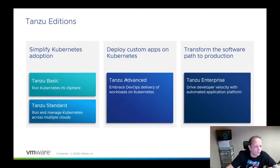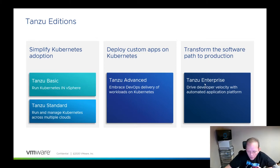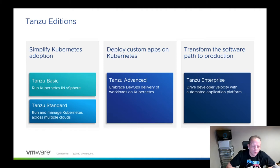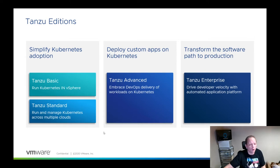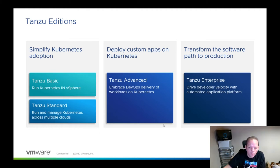Tanzu Editions — we've talked about Tanzu service on vSphere, a little about what it is technically, like TKG service and Tanzu Kubernetes Grid. Tanzu Editions is how they're licensed and packaged. Tanzu Basic and Standard are focused more on running and managing applications — more of an operational side of things — while Advanced and Enterprise are focused on a broader range of development tools.